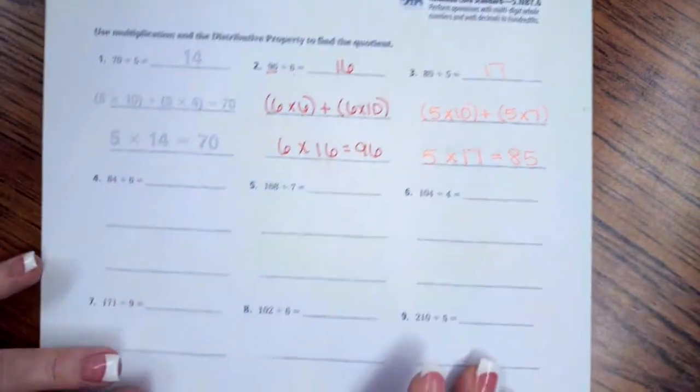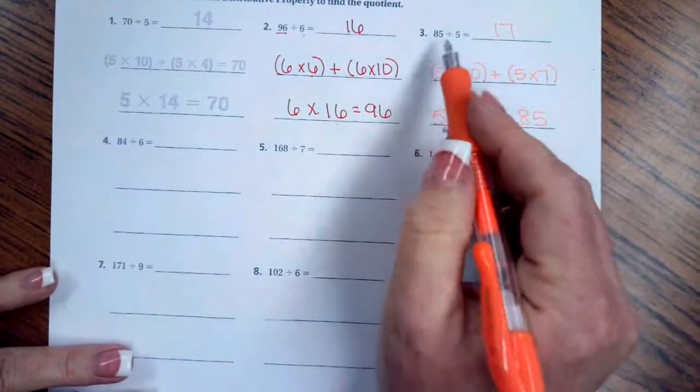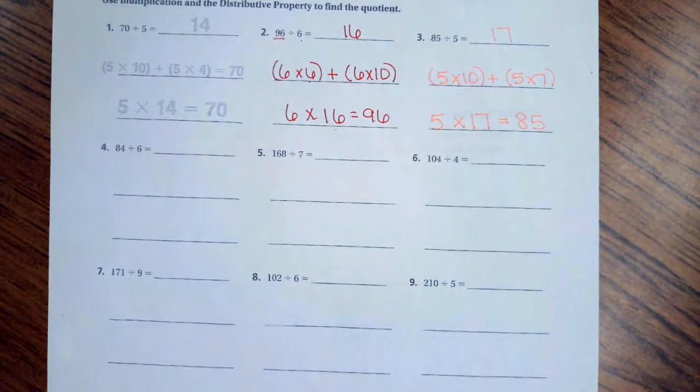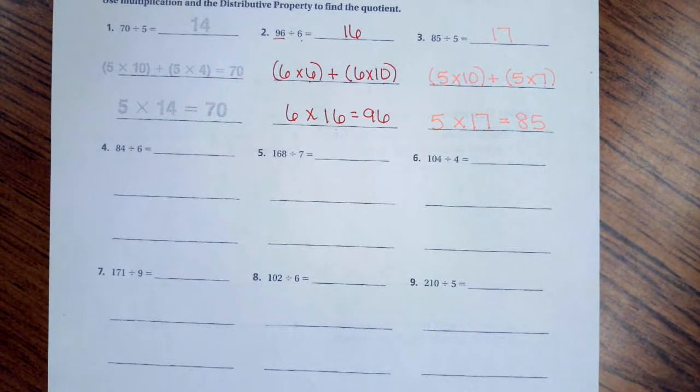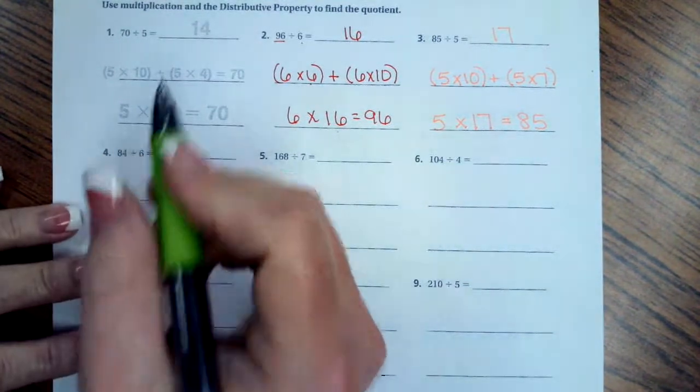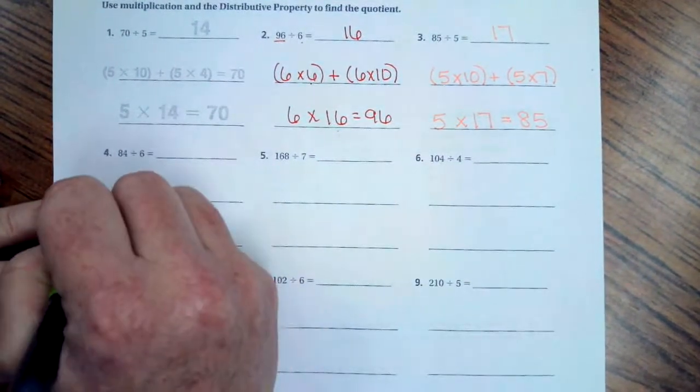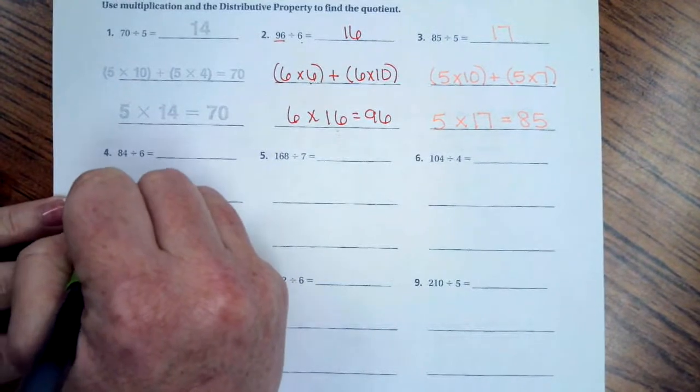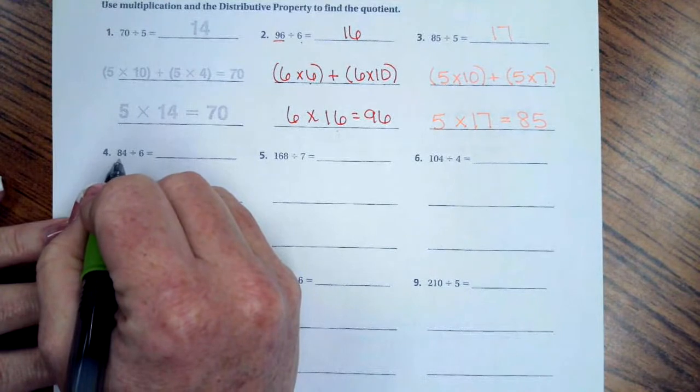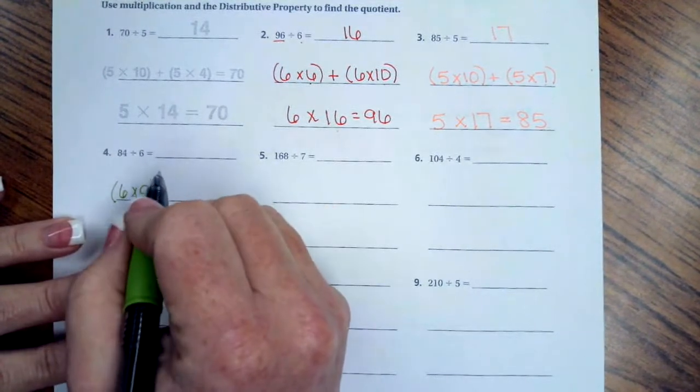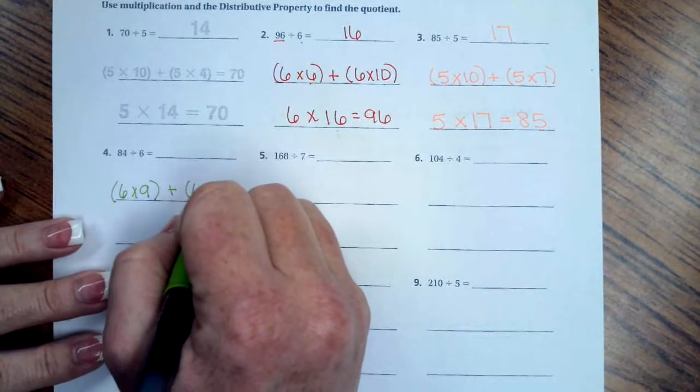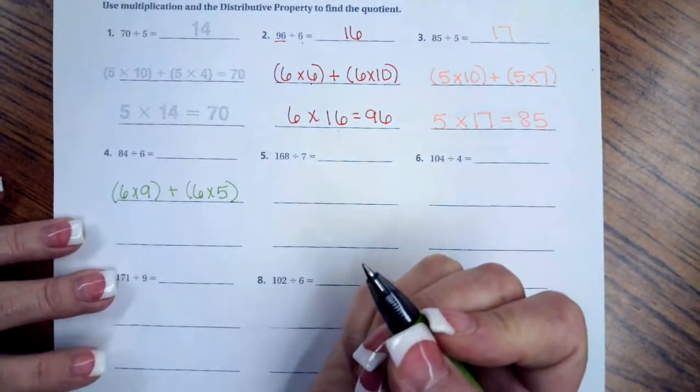We're going to do one more. All we're doing is breaking apart this number in easily divisible numbers. So 6 is again. Well, so I know that 6 times 9 is 54. If I take 54 away from 84, then I'm left with 30. So I know that 6 times 5 is 30.